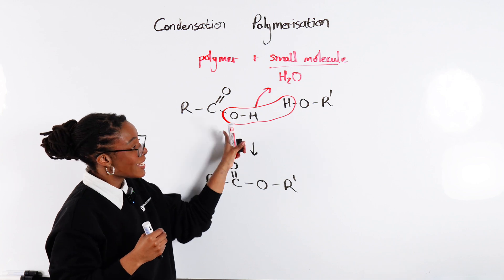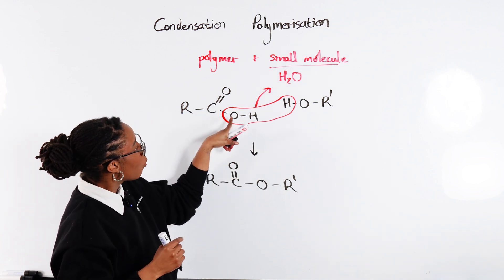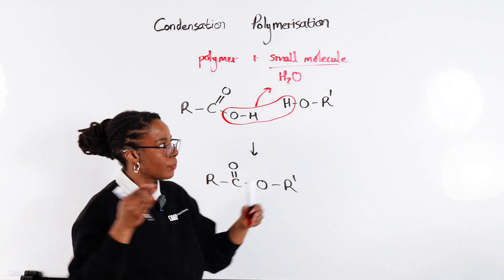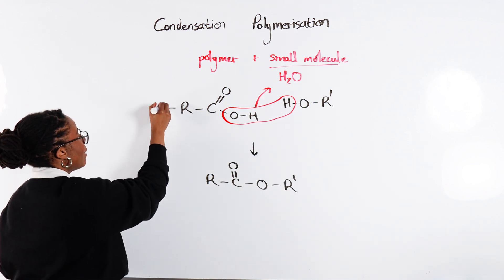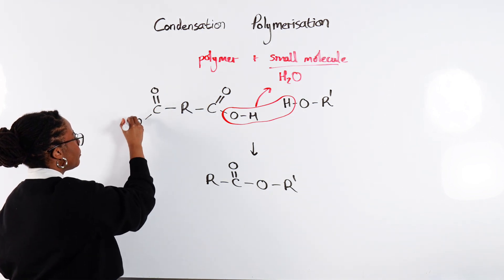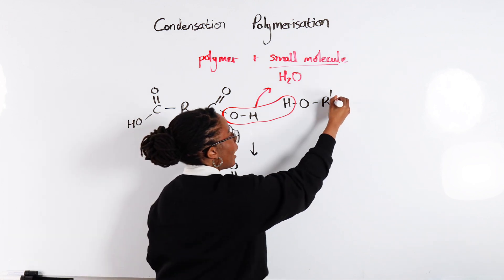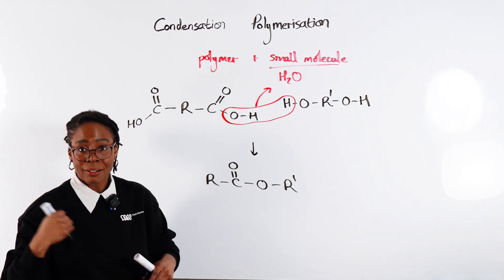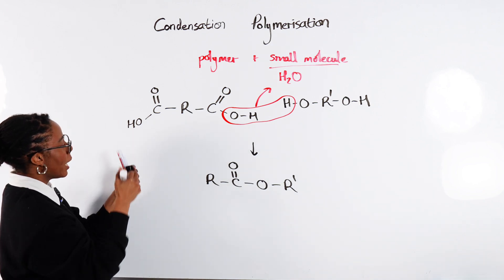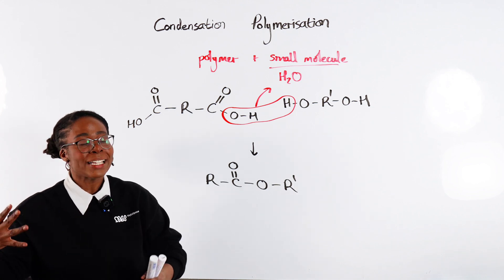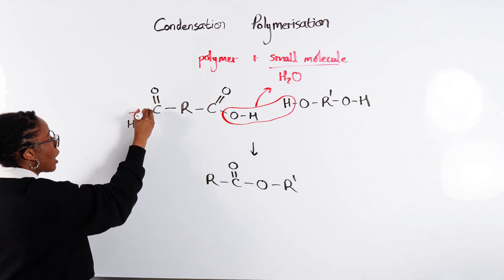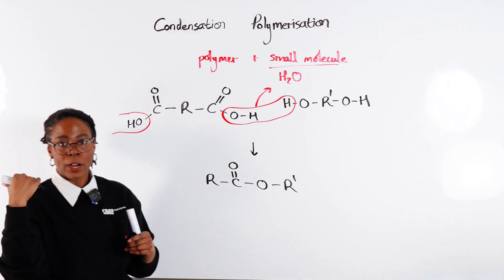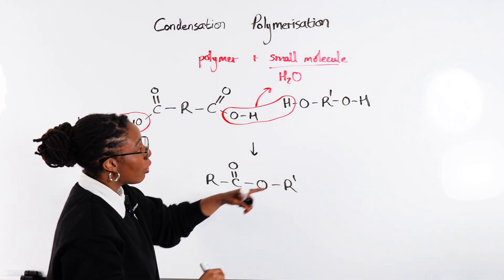When it comes to a polyester — a long repeating chain with ester bonds or ester links — it's based exactly on this, but in order for our chain to continue we can't just have one of each functional group. We need the functional groups to be on both sides of the molecules so they can attach chain-like end-on. So instead of just a regular carboxylic acid we will have a dicarboxylic acid, and instead of just a regular alcohol we will have a diol.